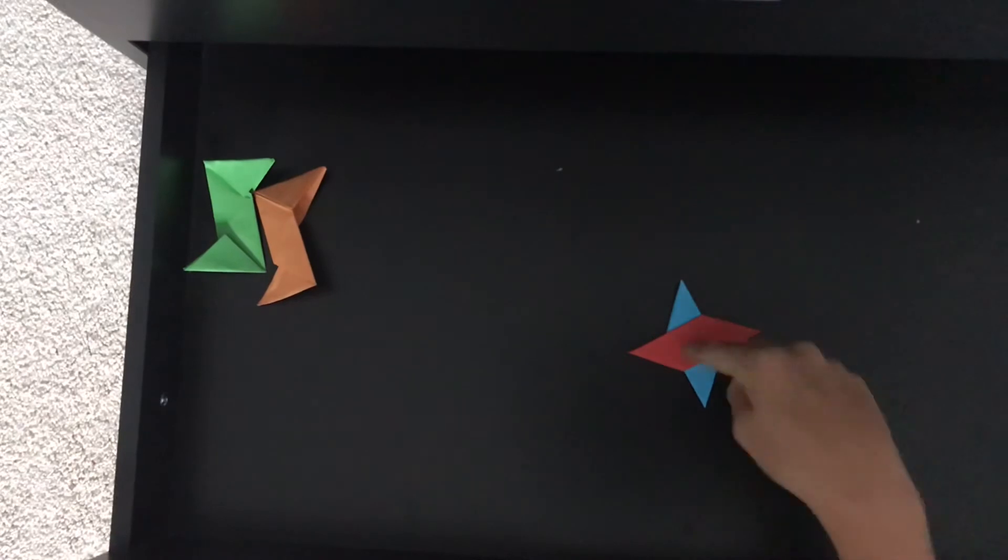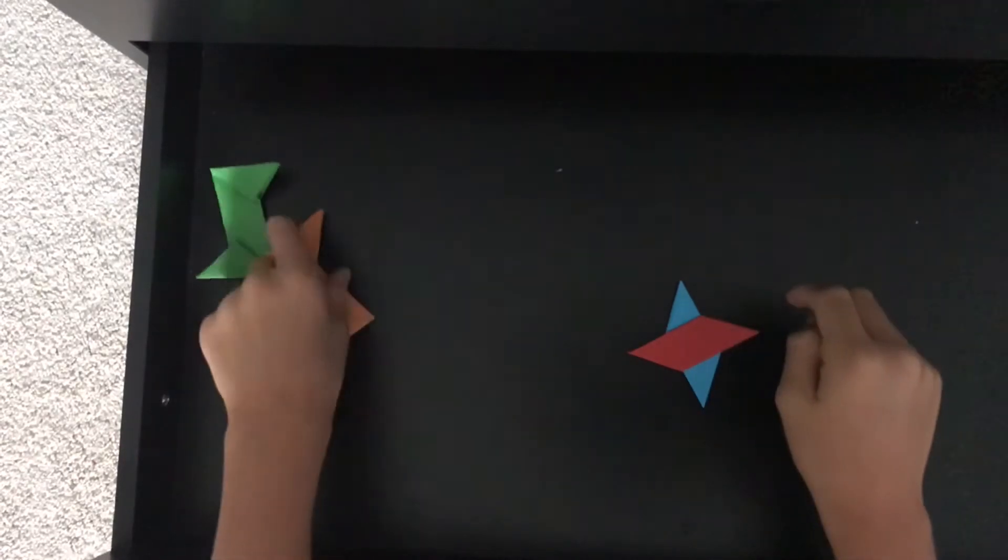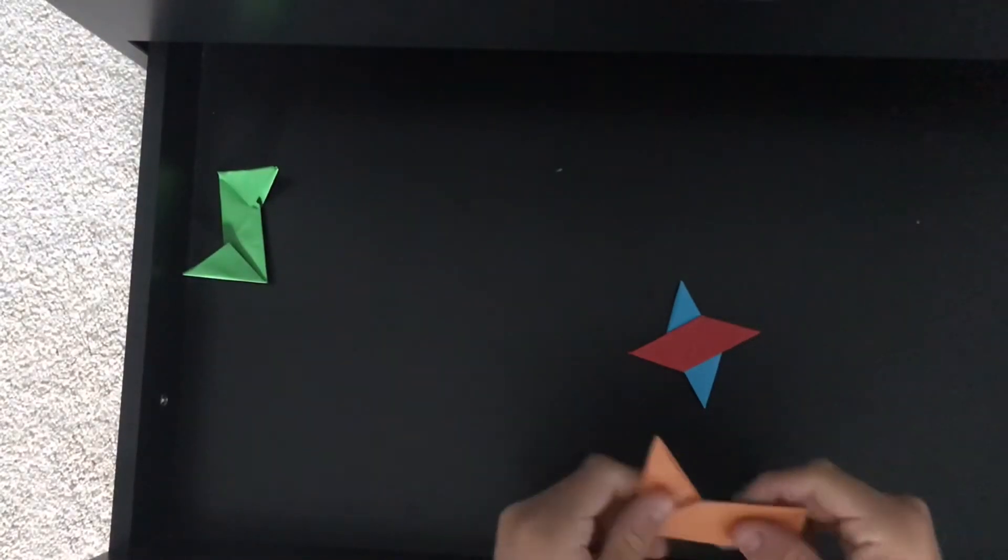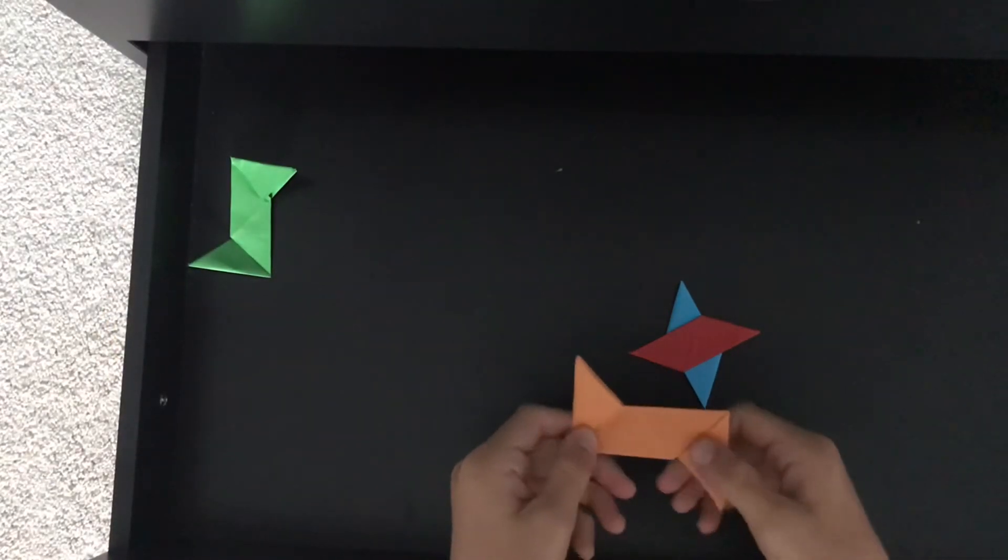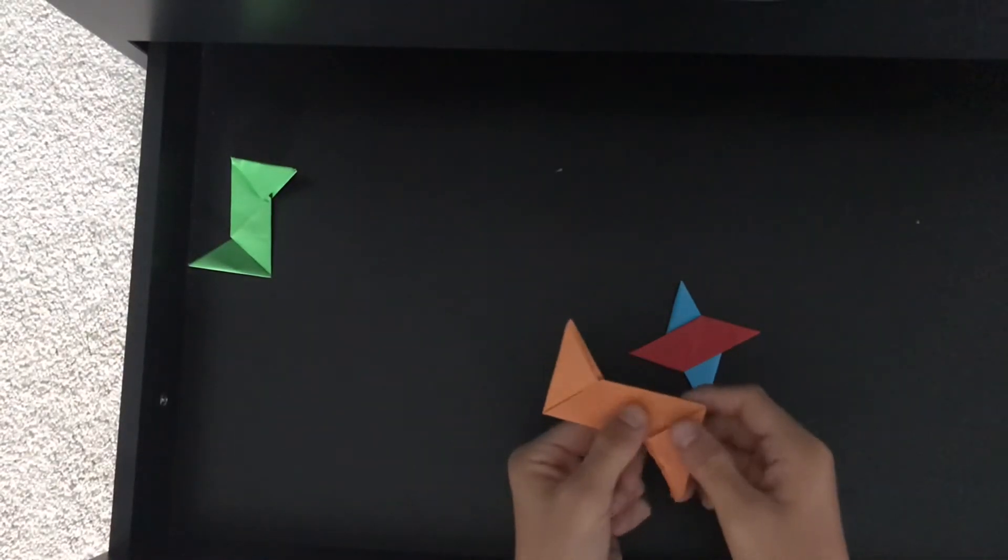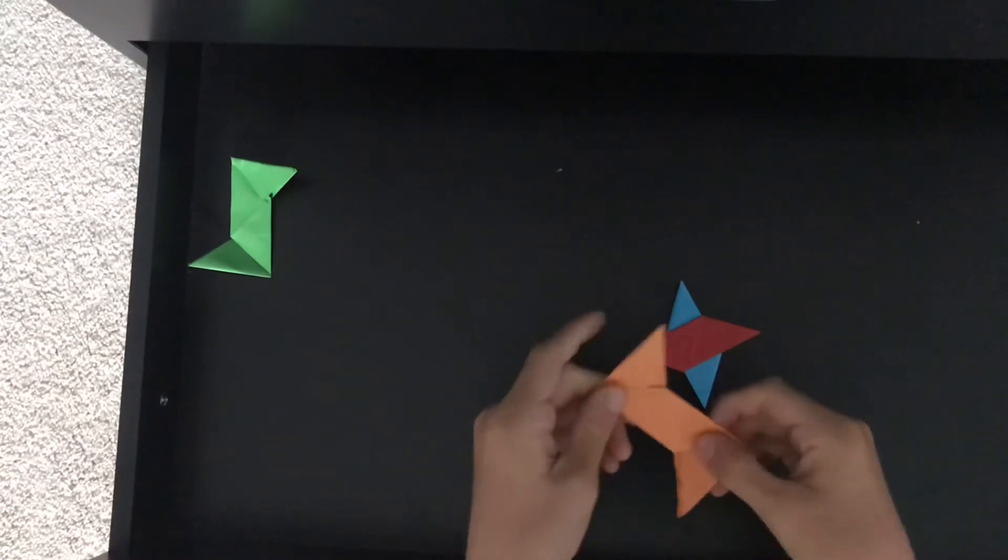Then, you want to flip it over, and you'll see that. Now, you have to put another one, the third paper. Make sure it's still on the side that we've always been using, the one that has the two thingies.